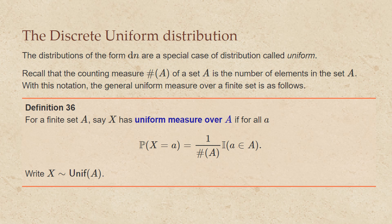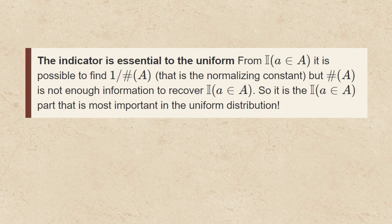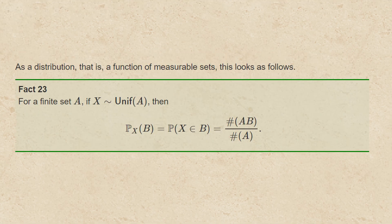We write x has distribution uniform over A. The indicator is essential to the uniform. From the indicator that little a is in big A, it is possible to find the normalizing constant — the size of A, inverted. But knowing the size of A is not enough information to recover the indicator that little a is in big A. So it is the indicator part that is the most important in the uniform distribution.